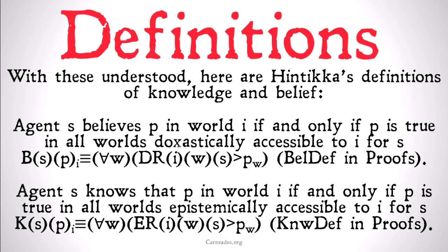Agent S knows that P in world I, if and only if, P is true in all worlds epistemically accessible to I for S. So S knows that P in I if and only if, for all worlds W, W bears the epistemic accessibility relation to I for S, implies that, for all P that S knows, P is true in W. We'll use that as NODEF in proofs.